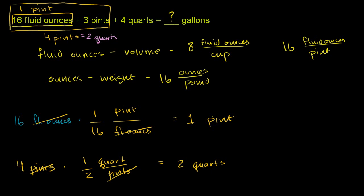So you have 2 quarts here plus another 4 quarts. So this entire quantity, 2 quarts plus 4 quarts, are going to be 6 quarts. So the entire quantity is 6 quarts, and we have to convert that to gallons.